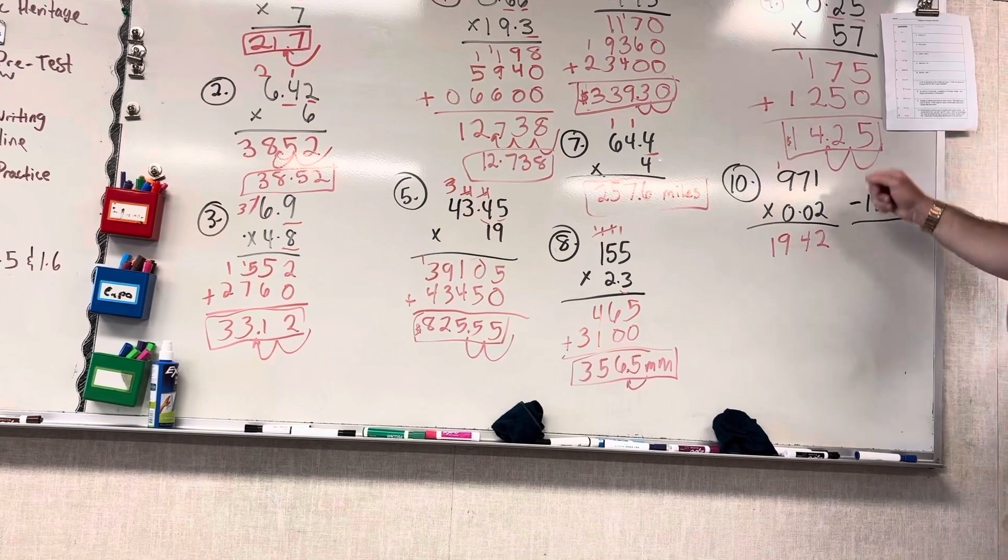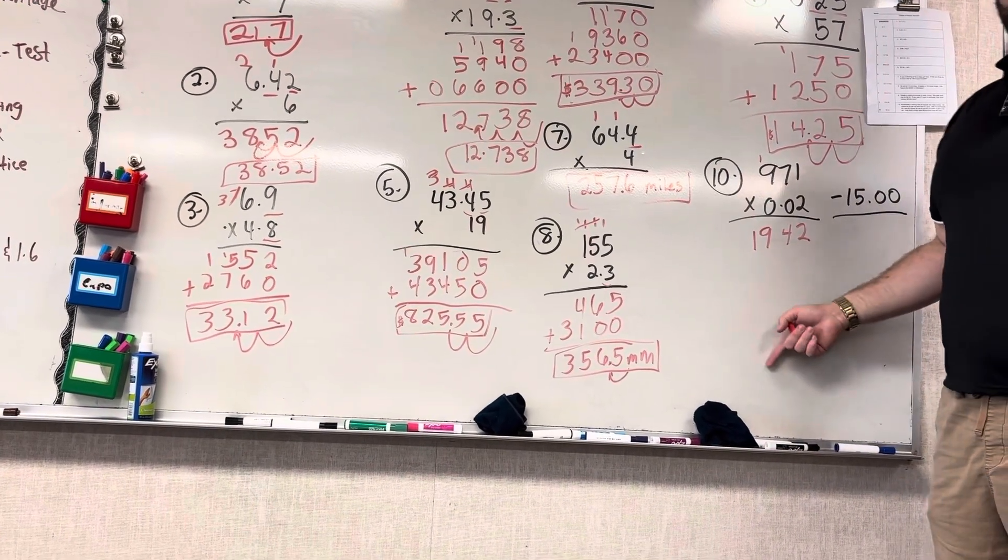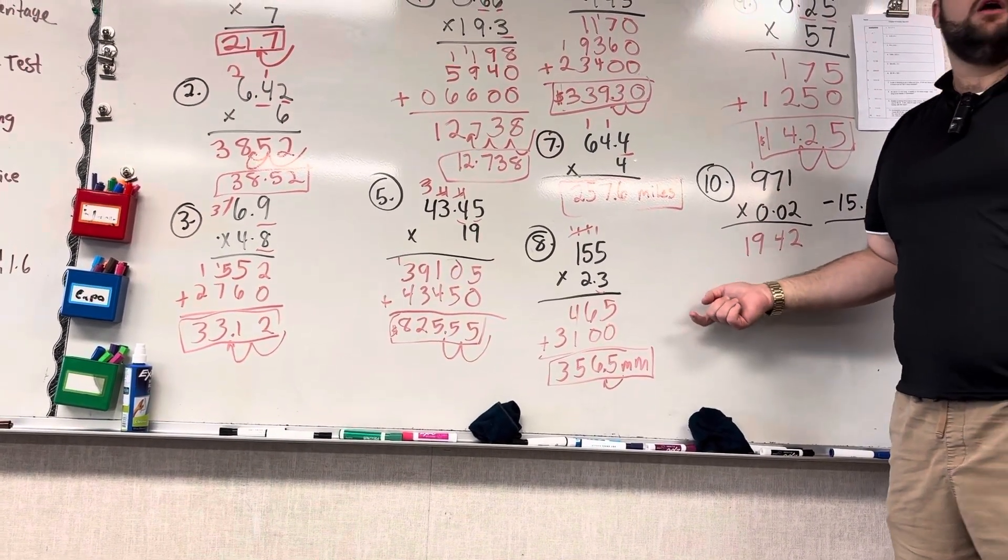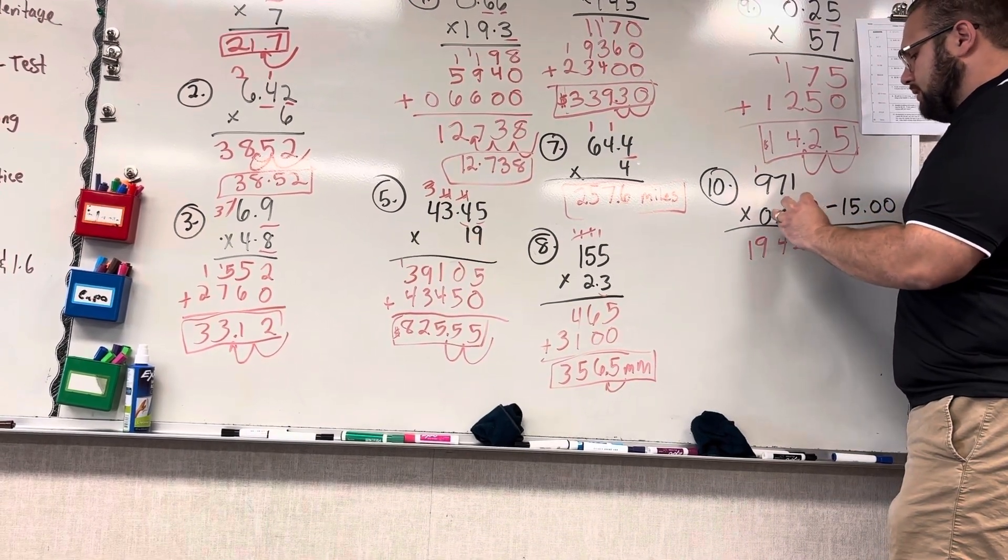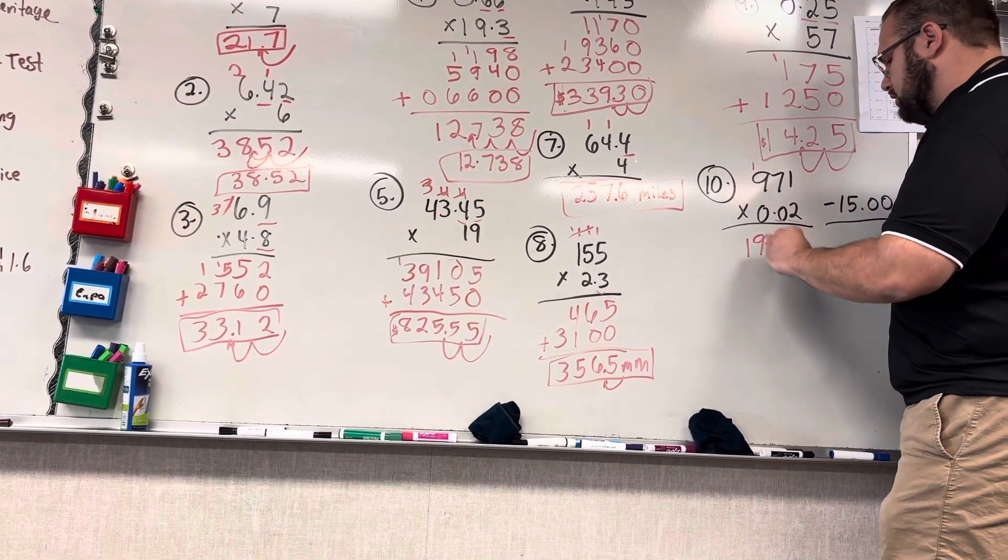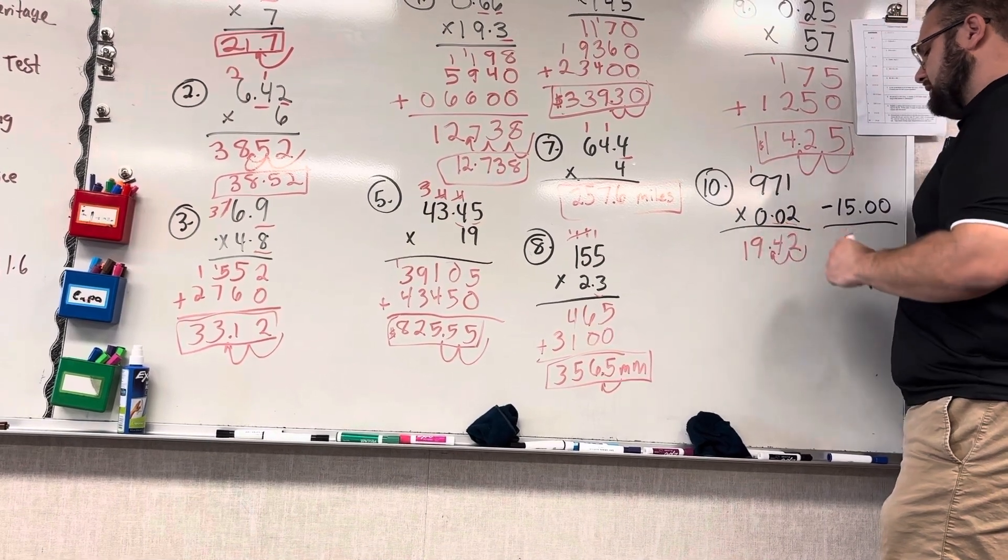You don't need to do the 0s. It's going to be 0. So when you add it up, it's going to be the same number. Why bother? I know there's 2 numbers behind a decimal, so I'm going to go 1, 2. That's going to make me $19.42.